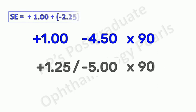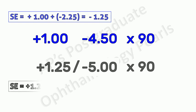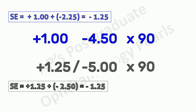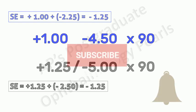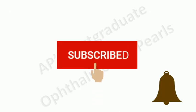The spherical equivalent of the first prescription is plus 1 plus half of minus 4.5, that is minus 2.25, which gives minus 1.25. The spherical equivalent of the second prescription is plus 1.25 plus half of minus 5, that is minus 2.5, which gives us again minus 1.25.